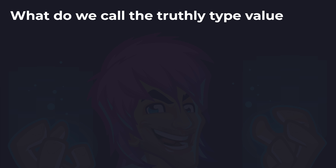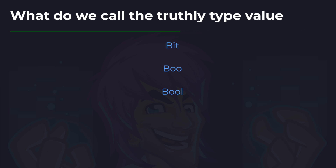What do we call the truthly type value? Is it a bit, a boo, or a bool? And the answer is a bool. It's short for boolean and comes from George Boole who invented boolean logic. Boolean simply means truthly — true or false. A bit can represent a truthly value because it can only be a zero or a one, effectively yes or no, true or false. But that isn't a type — the type itself is bool.